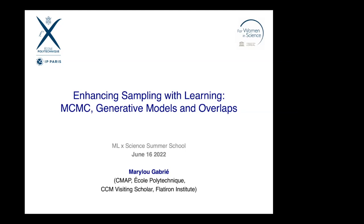Mary Lou Galpier is an assistant professor at Polytechnique in France. She works on understanding neural networks with statistical physics and is very interested in applying statistical physics to neural networks and building new ML techniques for science. Today she is going to talk about how to enhance MCMC sampling with machine learning.